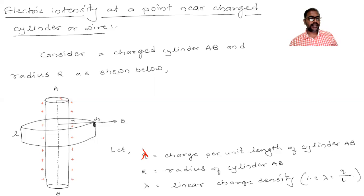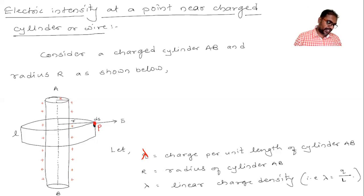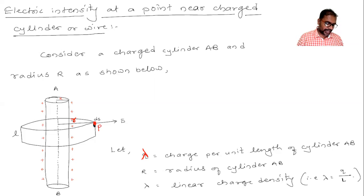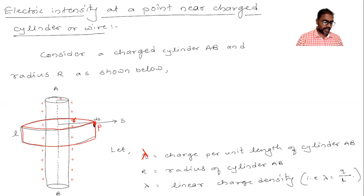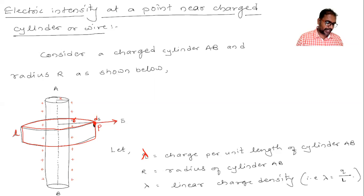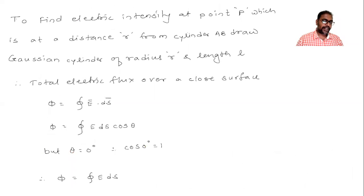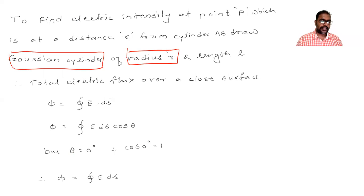We have to find the electric intensity at point P, which is at a distance small r from cylinder AB. To find electric intensity at point P, we draw a Gaussian cylinder whose radius is small r and length is small l. On every portion of this Gaussian cylinder, the electric intensity is the same.